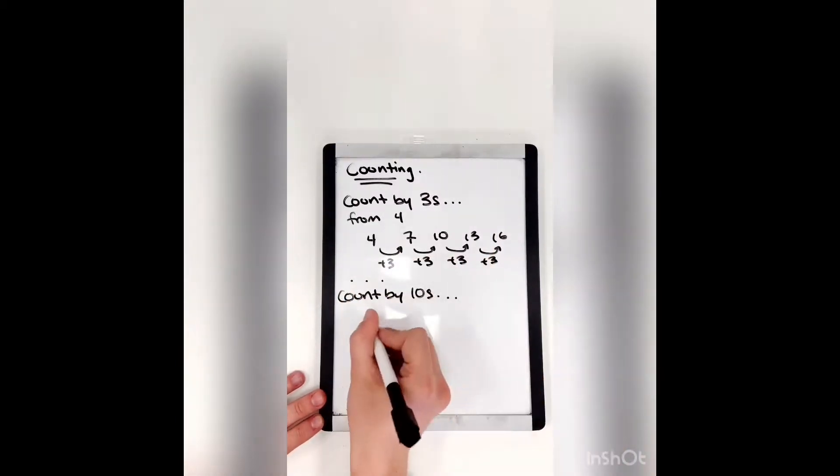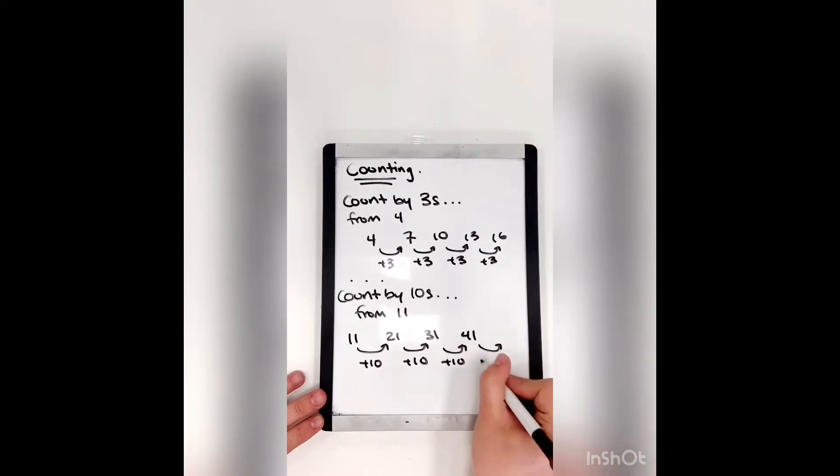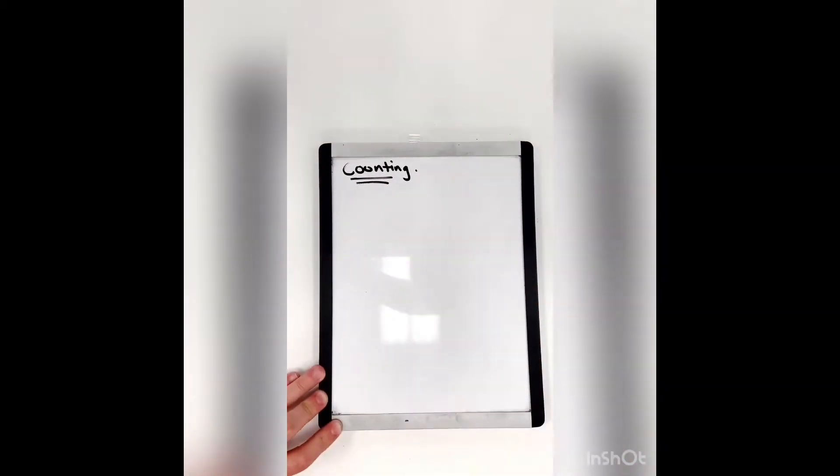Now we'll try counting by tens. We'll start from eleven. Eleven plus ten is twenty-one. Plus another ten, thirty-one. Plus ten again, forty-one. And ten one more time is fifty-one. And that also can go on and on forever.